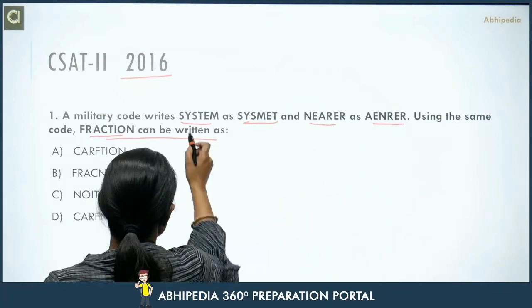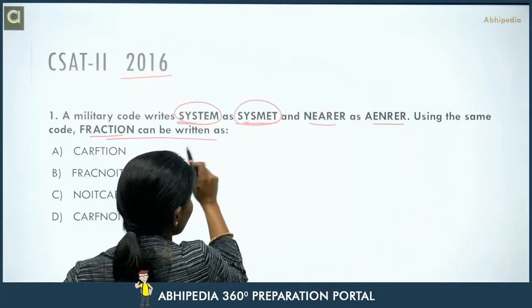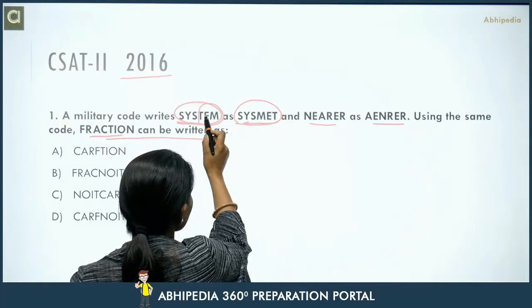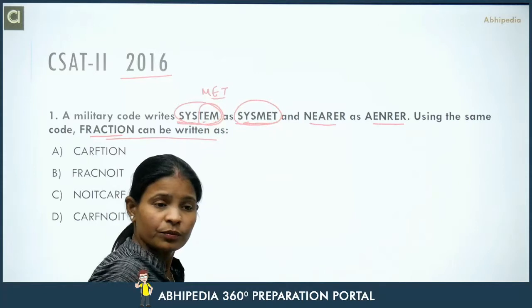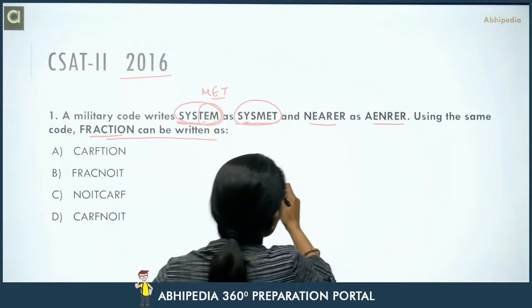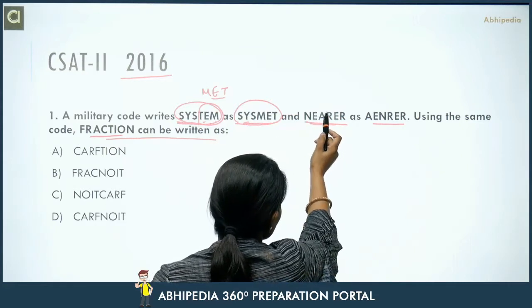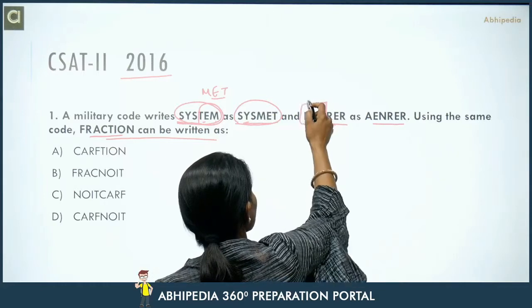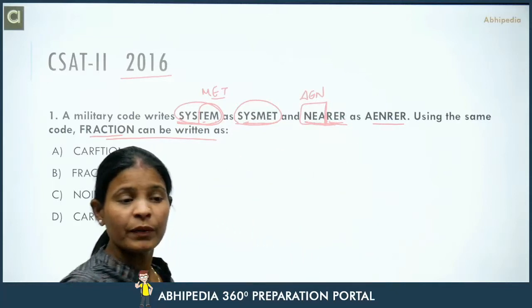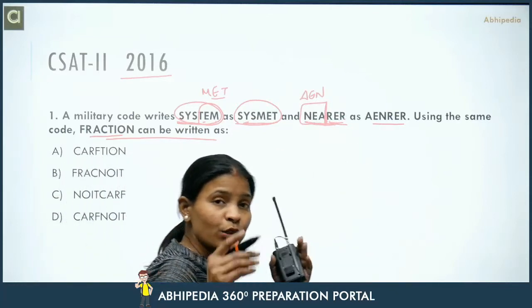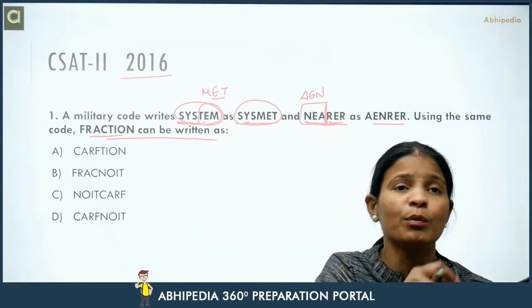Here we can see that 'system' is written as 'sismet'. Looking at 'nearer', the three-letter halves of the word are exchanging positions — that means the word is divided into two parts and their positions are exchanged. The remaining letters like 'r-e-r' stay the same.